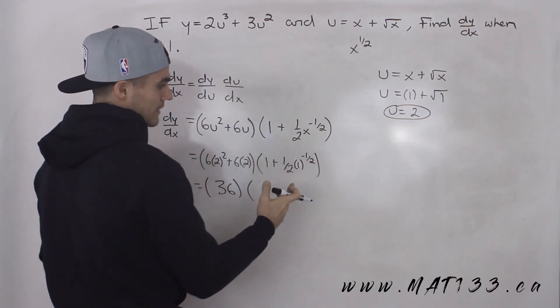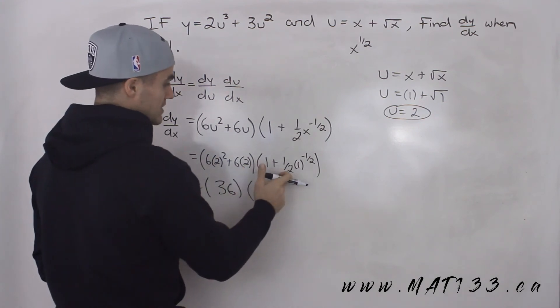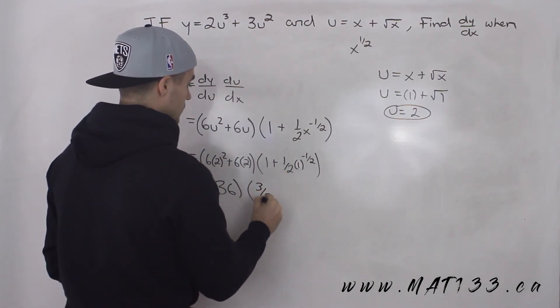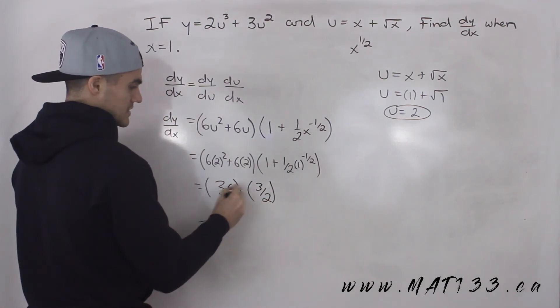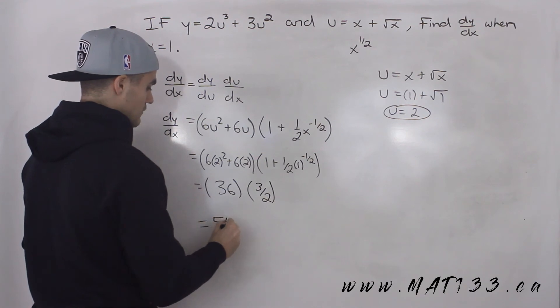And then 1 to the power of negative 1 half is just 1, 1 plus a half is 3 over 2, or 1.5. And then 36 times 3 over 2, that just gives us 54.